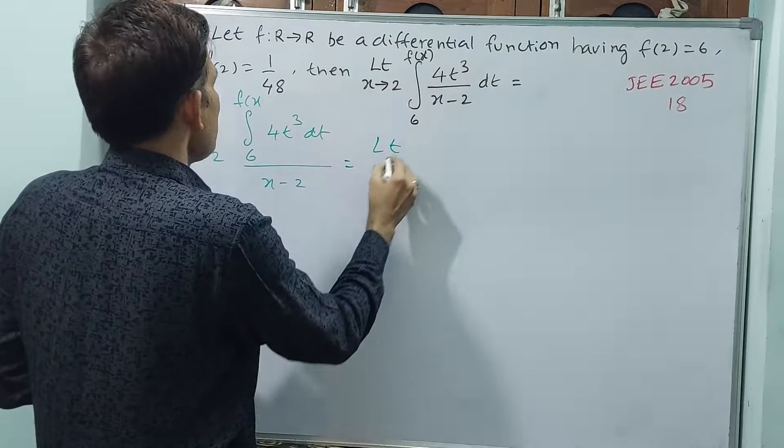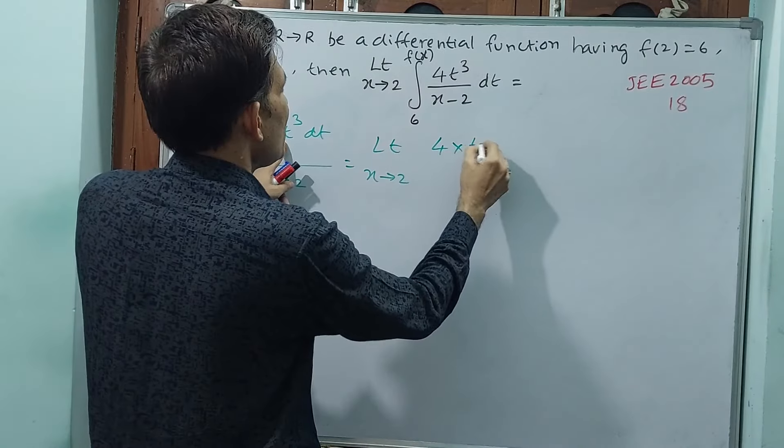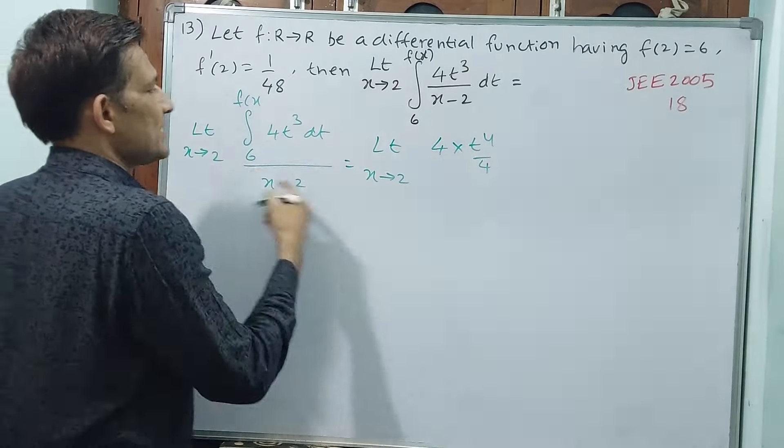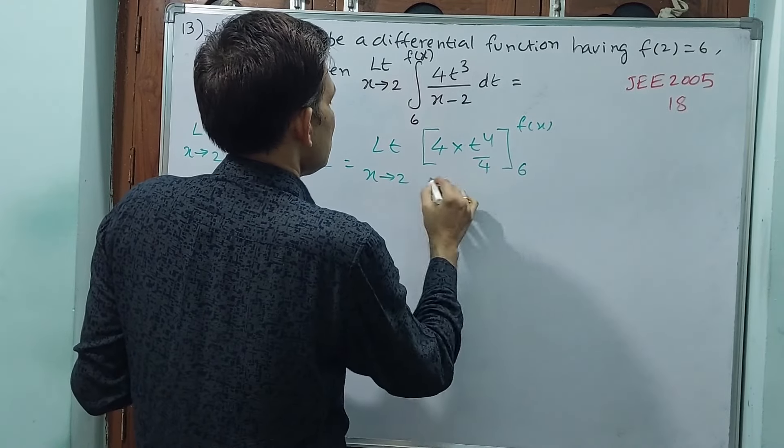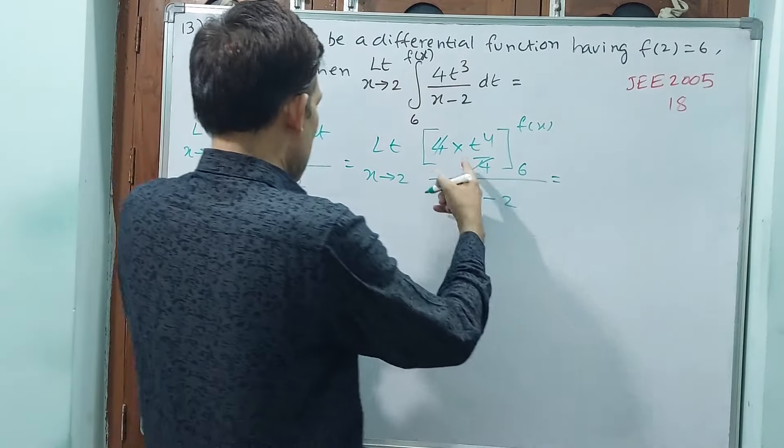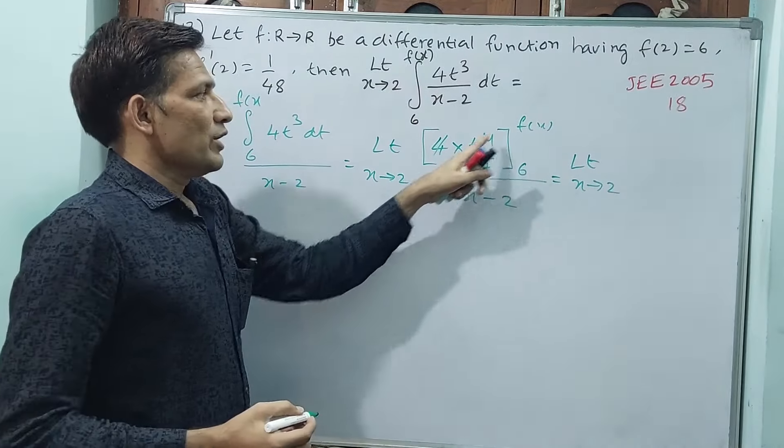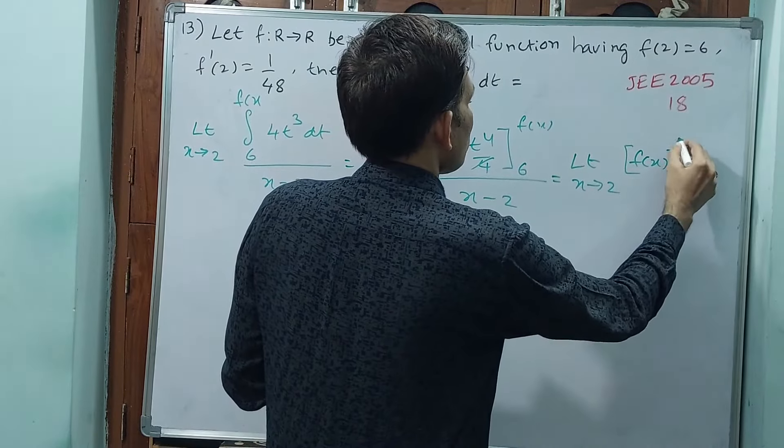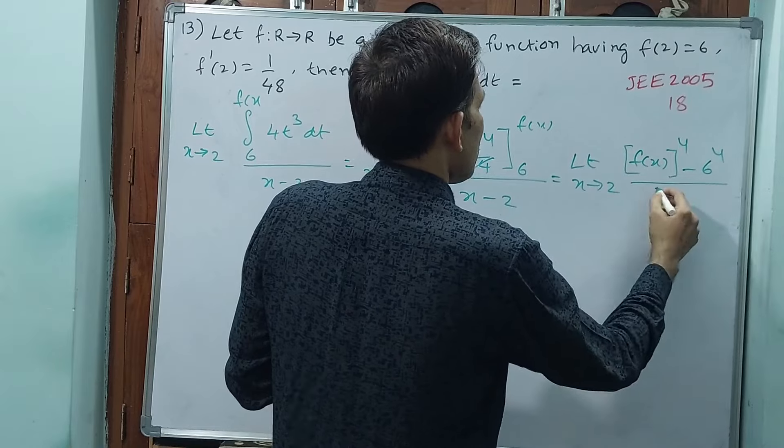That is equal to limit x tends to 2, 4 into t to the power of 4 by 4. Plus c will not come, why? Limits are there, upper limit and lower limit. The numerator, 6 to f of x, divided by x minus 2 still available. This 4, this 4 you cancel out. See numerator what will happen here. Limit x tends to 2, f of x to the power of 4 minus 6 to the power of 4, by x minus 2.